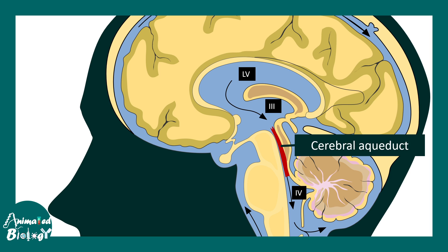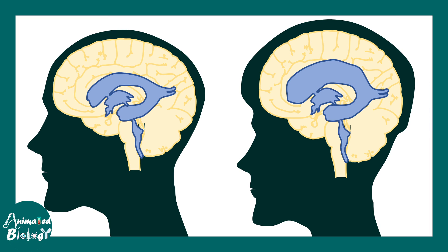In cerebral aqueductal stenosis, this particular passageway is blocked and that leads to fluid accumulation in the ventricles, especially in the lateral ventricles, which increases the intracranial pressure and dilates the ventricle wall to an extent that it leads to bulging. This is a key cause of obstructive hydrocephalus.